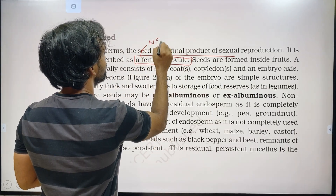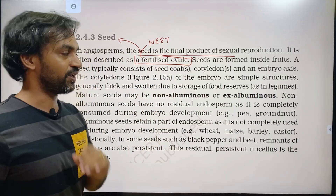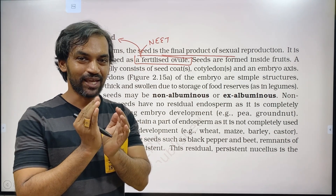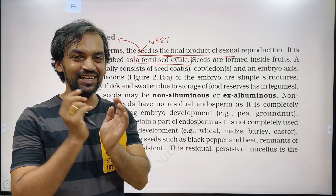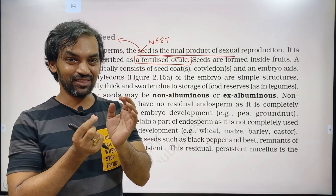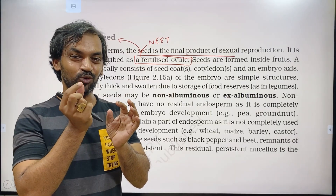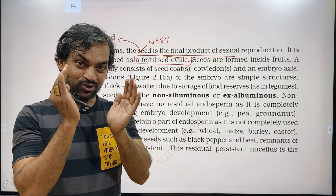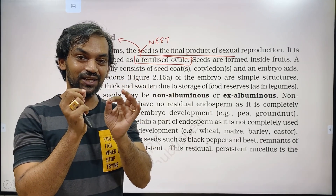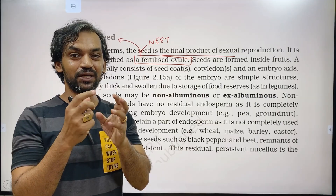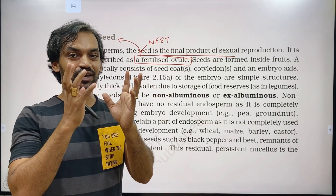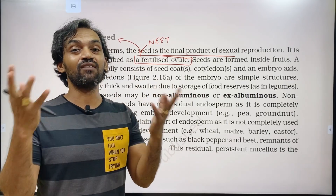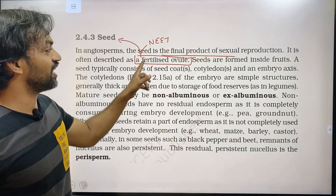What is a fertilized ovule? Seed — don't forget this. The ovule contains the embryo sac. The pollen tube enters the embryo sac, and the male gamete fuses with the female gamete — the egg — forming a zygote. The zygote develops into an embryo, and the ovule becomes the seed. So fertilized ovule is the seed.